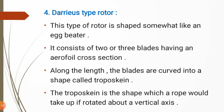The fourth type is the Darrieus type rotor. This rotor is shaped somewhat like an egg beater, which is an instrument generally used in a kitchen. It consists of two or three blades having an aerofoil cross section. Along the length, the blades are curved into a shape called troposkine.